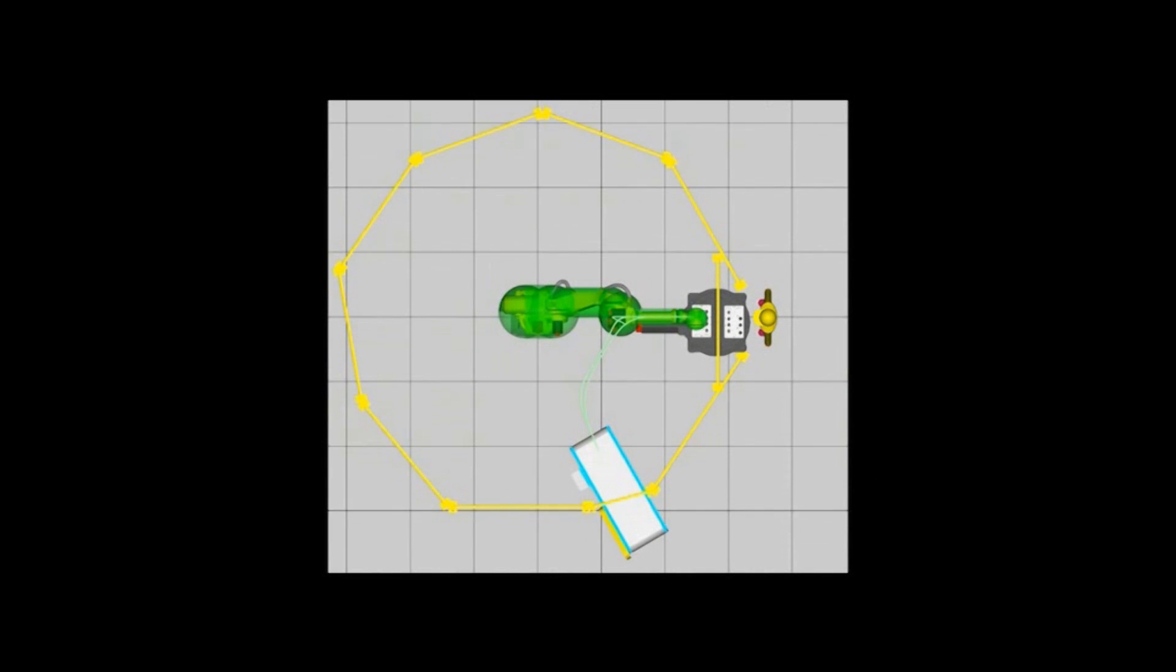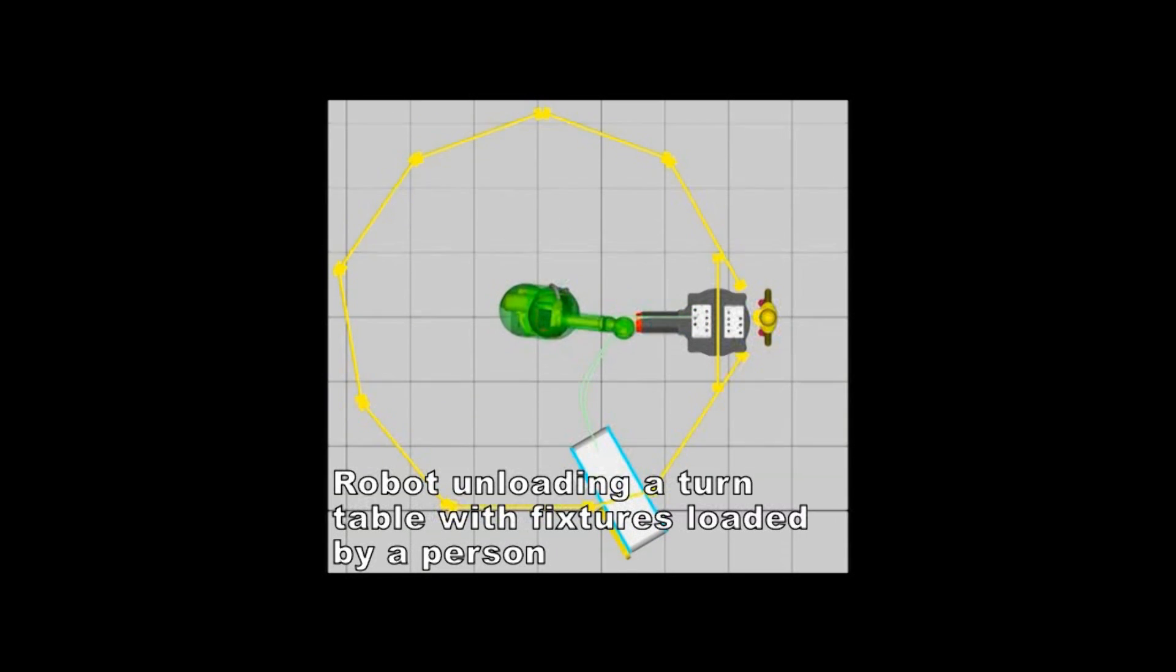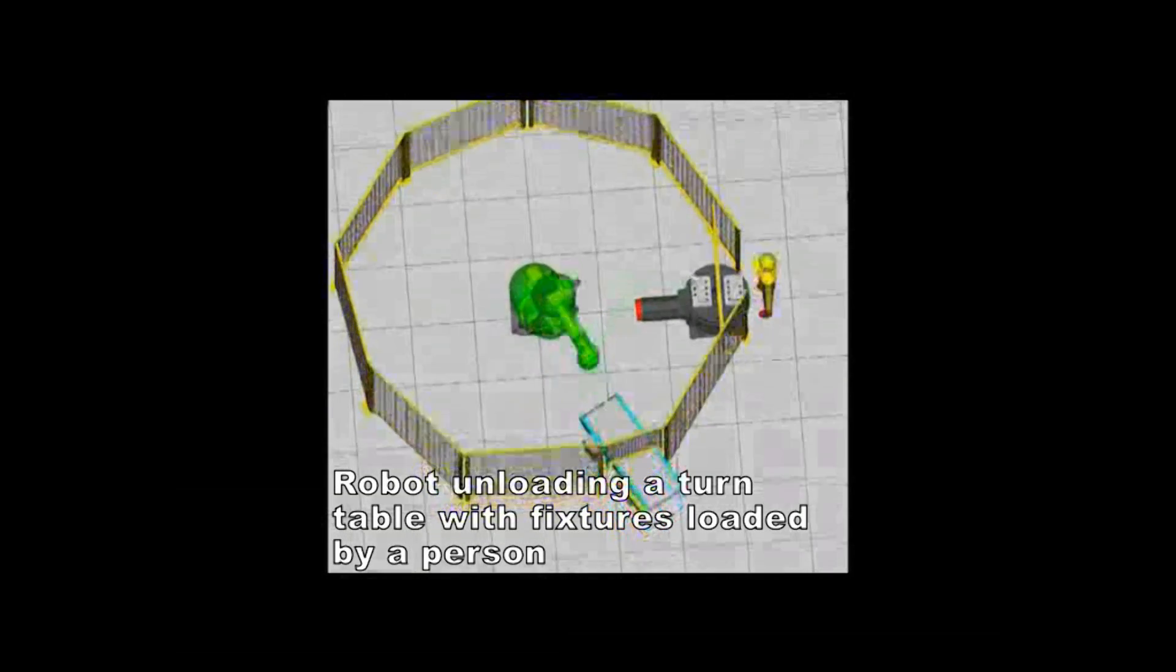Without DCS Speed Checking, an operator needs to load a fixture or turntable in order to interact with the robot.